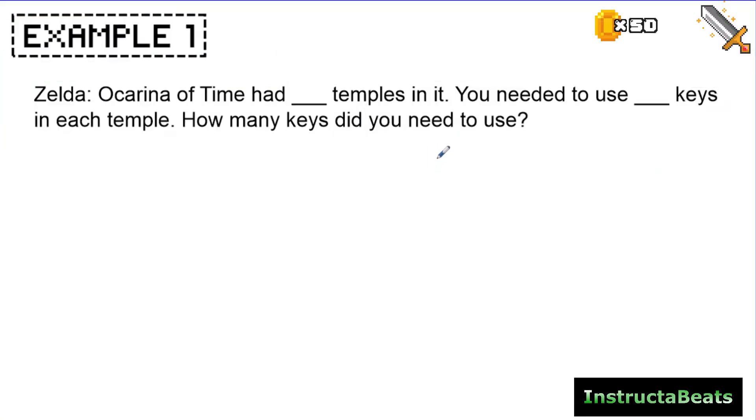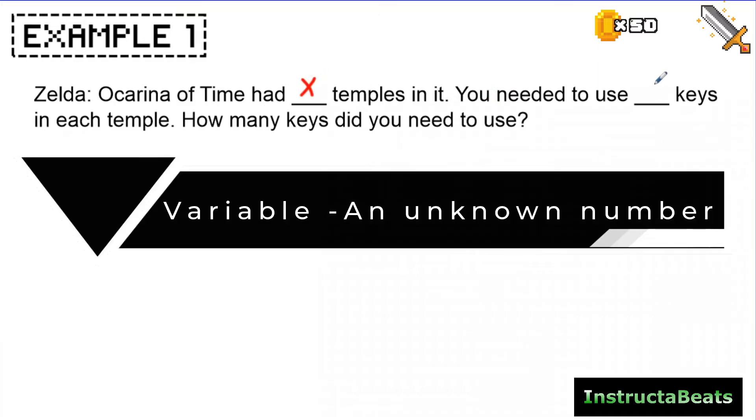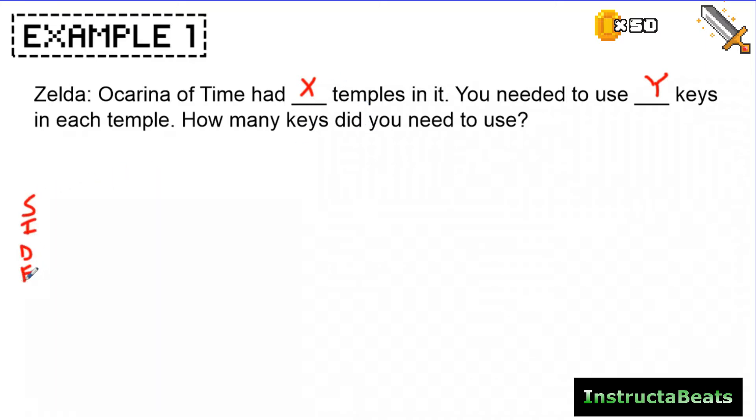Here we go. This is the same problem as the last lesson because I wanted to do it with a familiar problem. Zelda Ocarina of Time had blank temples in it. You need to use blank keys in each temple. How many keys did you need to use? So sometimes these word problems will say some temples in it or sometimes they'll have a blank. I'm going to go ahead and just put an X and a Y here just as variables, that means hey, I know this. Just saying I don't know what these numbers are and it's not important to this, but I do know that these are numbers.